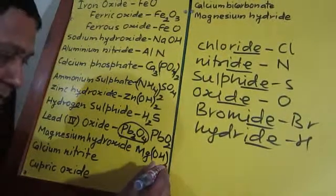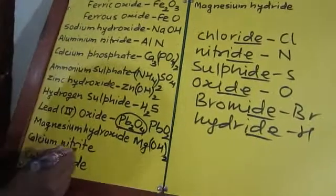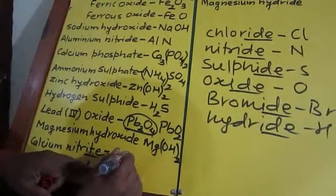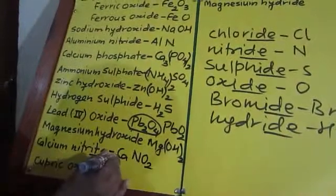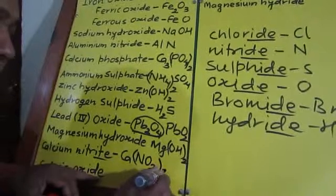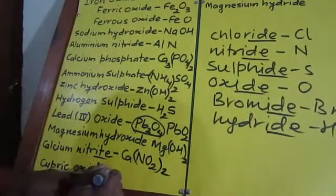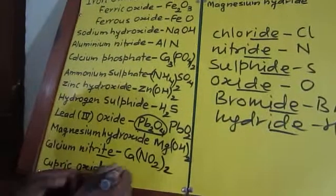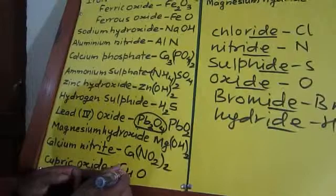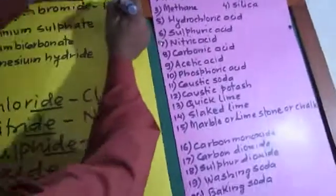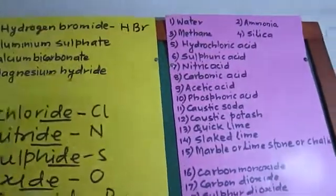Magnesium hydroxide: Mg with OH. Magnesium has valency 2 and hydroxide has valency 1, so magnesium's 2 is transferred to hydroxide, giving Mg(OH)₂. Calcium nitrite: Ca with NO₂. Calcium valency 2, nitrite valency 1 — calcium's 2 goes to nitrite, giving Ca(NO₂)₂. Cupric oxide: 'cupric' means copper has its maximum valency of 2; oxygen also has valency 2 — equal valency, no exchange, giving CuO.